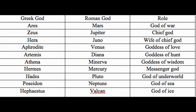Mercury: messenger of God, or God of travelers. Saturn: God of agriculture and harvest. To the Greeks, he is known as Cronus, God of Cronus.